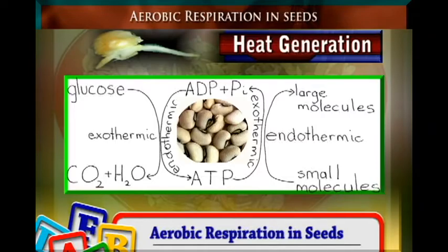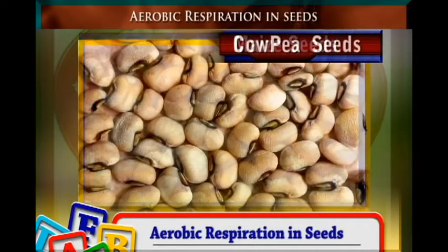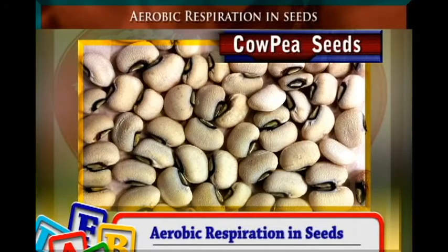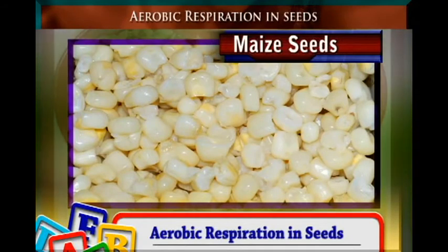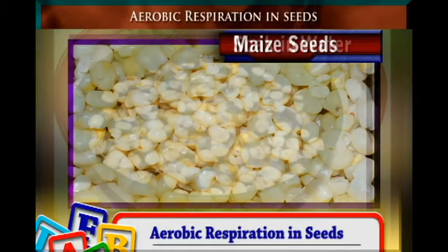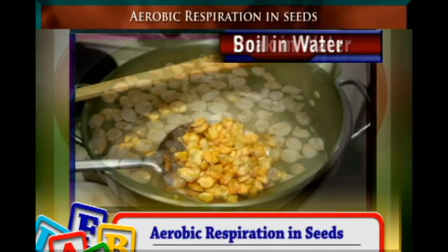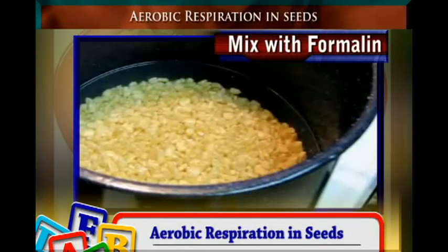This experiment can be carried out using maize seeds or cowpea seeds. Get a bunch of maize seeds and soak them in water. Also get another bunch of maize seeds, boil them — the boiling process kills them — then mix them with formalin to prevent bacterial infection.